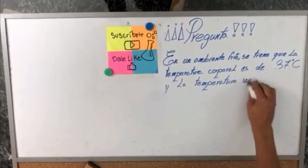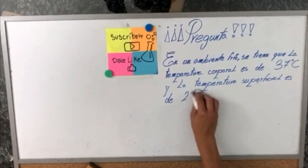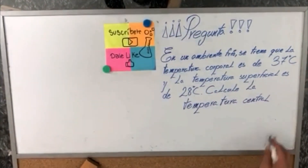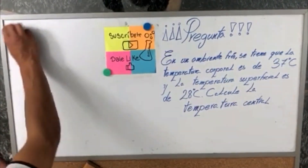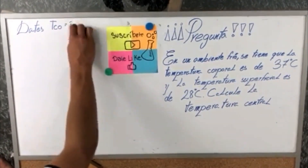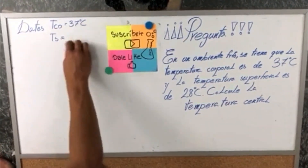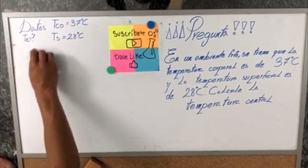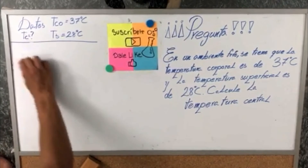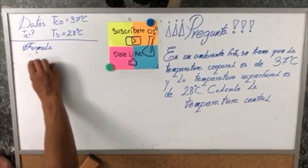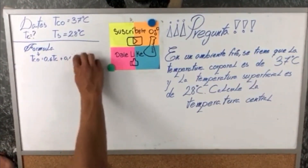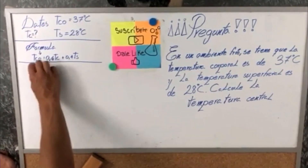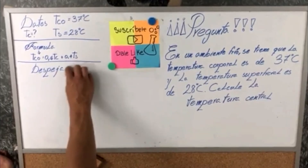Pregunta: para reforzar la materia, haremos una pregunta. En un ambiente frío, se tiene que la temperatura corporal es de 37 grados Celsius y la temperatura superficial es de 28 grados Celsius. Calcule a partir de esto la temperatura central. La temperatura corporal, como dato, es 37 grados Celsius, mientras que la temperatura superficial es 28 grados Celsius. En este caso, no tenemos la temperatura central, por lo tanto esta sería nuestra incógnita.